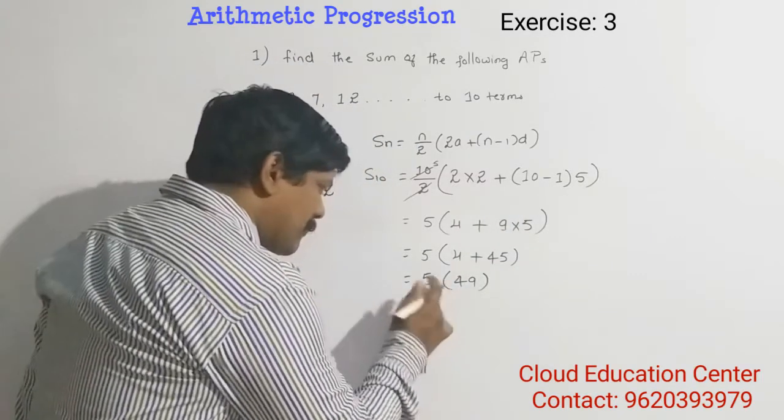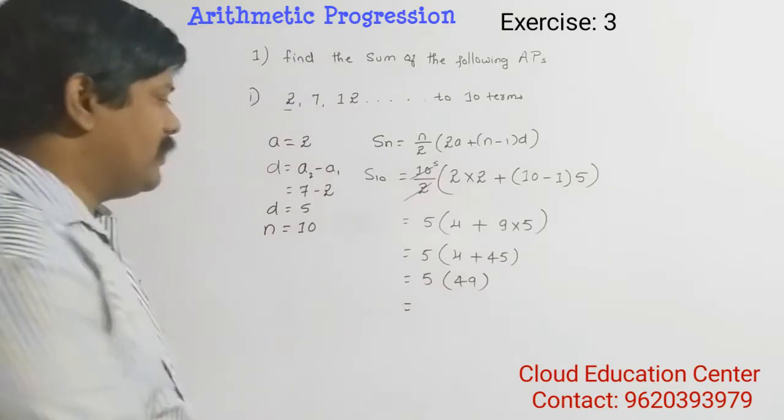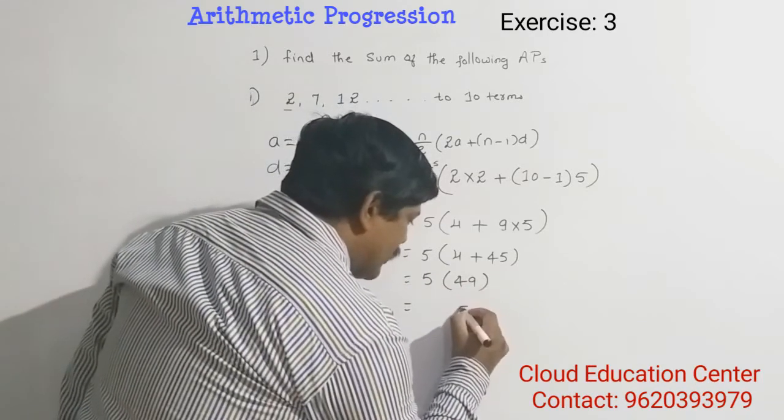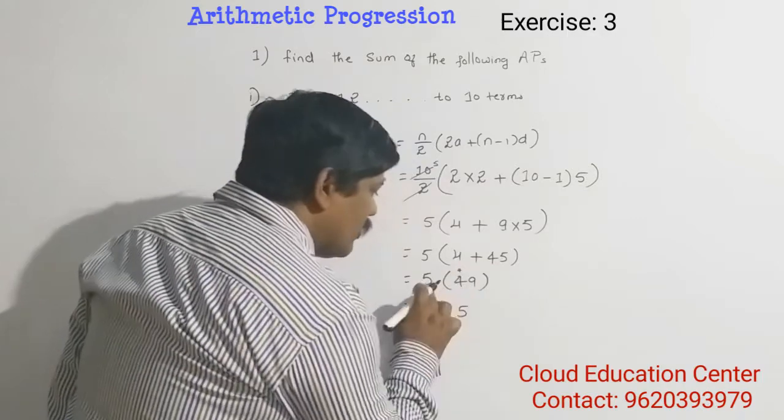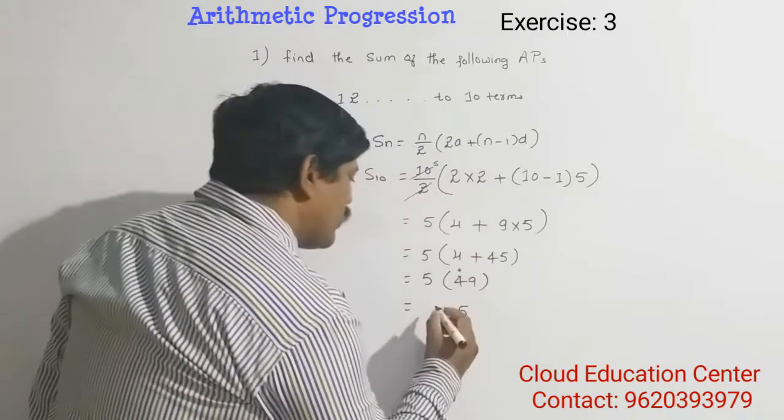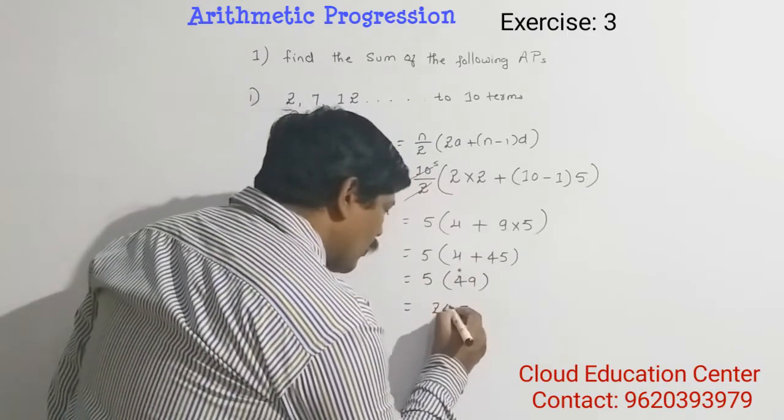Now, you multiply 5 into 49. So 5 times 9 is 45, carry 4. 5 times 4 is 20, 20 plus 4 is 24.